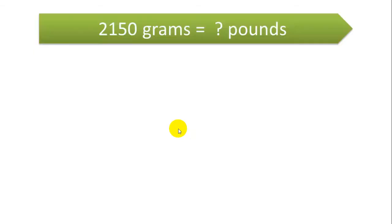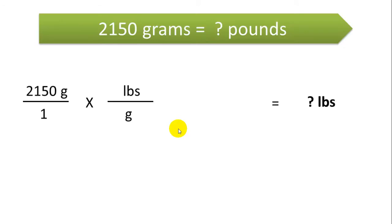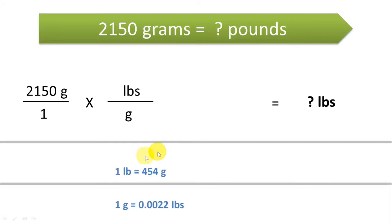Next, let's try to convert grams to pounds. If we have 2,150 grams, we need to figure out how many pounds that is. We need to cancel out the grams, so we need grams on the bottom and pounds on the top. We need a conversion rate for pounds to grams. Since these are both measures of mass, we can find this online: one pound equals 454 grams, and one gram equals 0.0022 pounds.